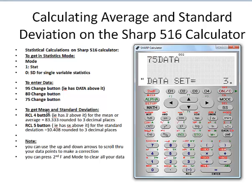And then if I want to get my mean and standard deviation from this, I'm going to need my recall button and the 4 key. If I hit recall and 4, notice how I get the average, the little x bar, and notice how above the 4 key is the little x bar.